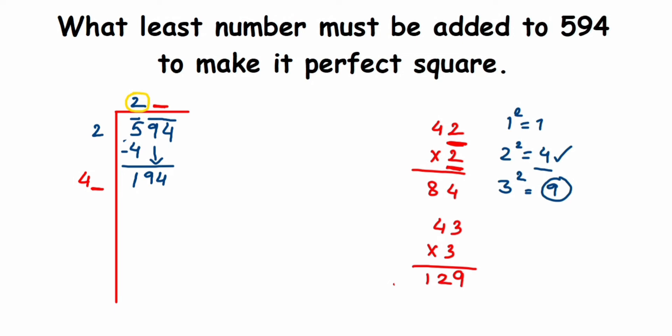So 44 multiplied by 4. 4 times 4 is 16, 4 times 4 is 16 plus 1 is 17. Next, let us try 45 times 5 to check if the number is still less than 194. So 5 times 5 is 25, 5 times 4 is 20 plus 2 is 22. So 225 - it is quite greater than 194.